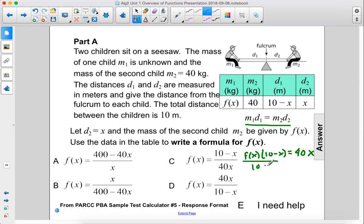So we just have to divide both sides by 10 minus X, and we get F of X equals 40X over 10 minus X, which is D.